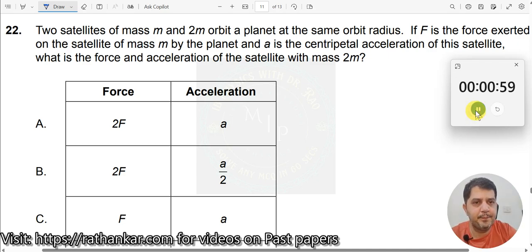Question number 22. Two satellites of mass M and 2M orbit a planet at the same orbit radius.